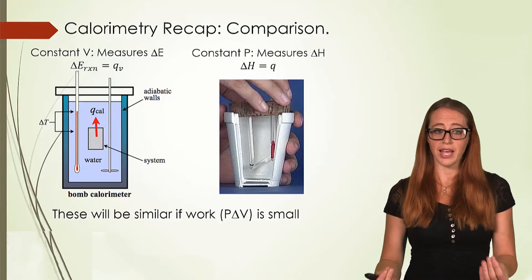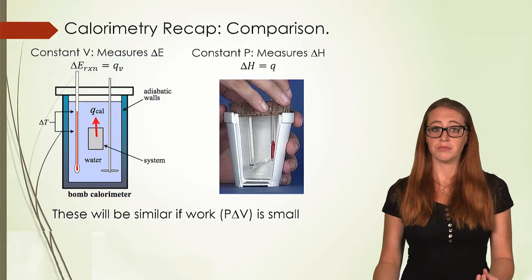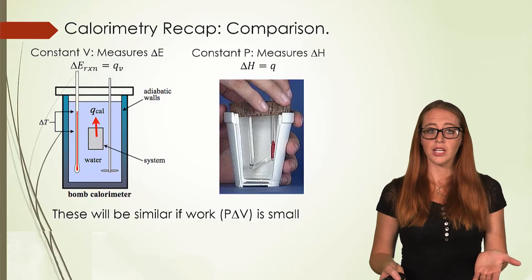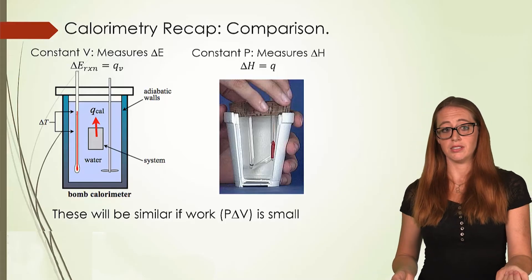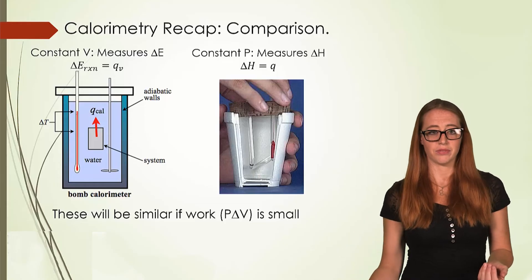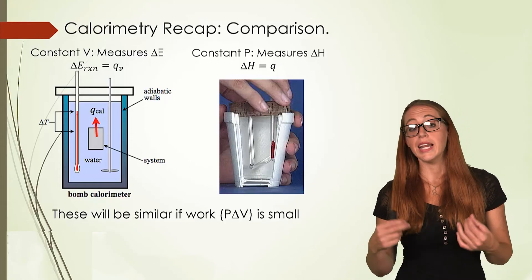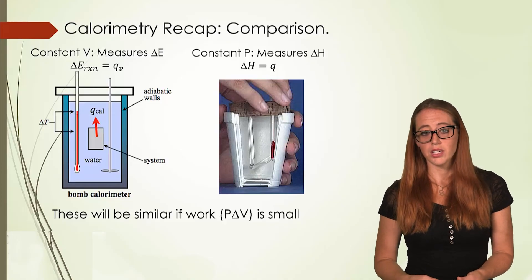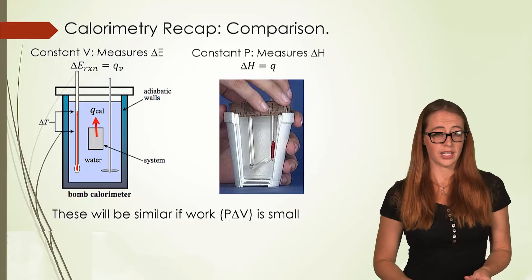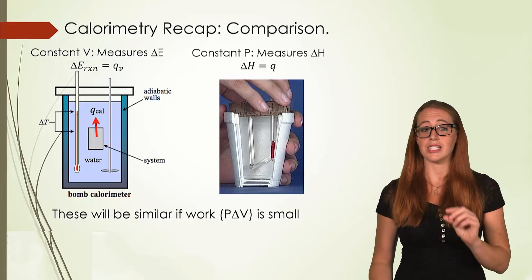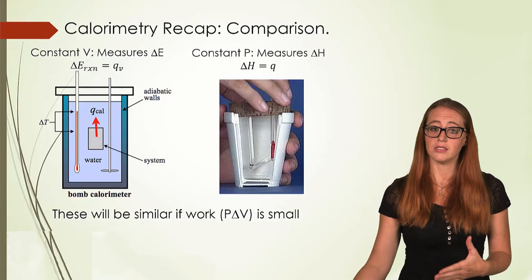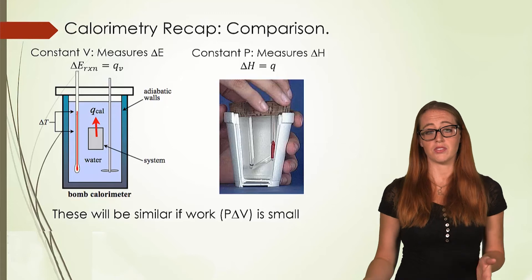In both of these, we have similarities — we're measuring Q. But because of the way the math works out, in bomb calorimetry we're measuring delta E, and in coffee cup calorimetry we're measuring delta H. These will often be very similar if very little work is done, meaning the change in volume is very small. The more work done, or the larger the change in volume, the more these values will differ.